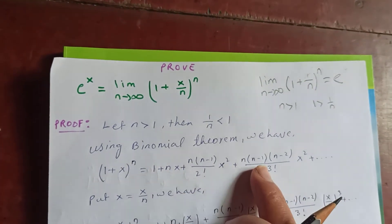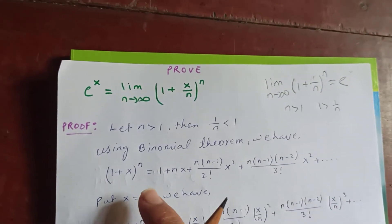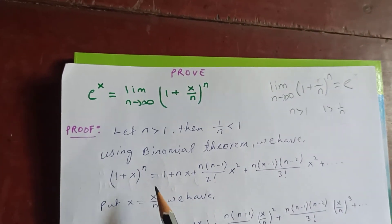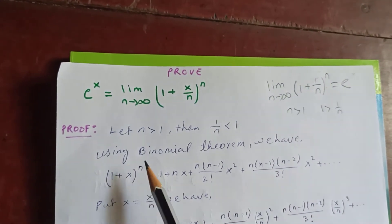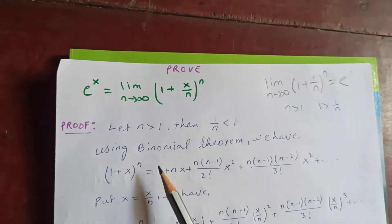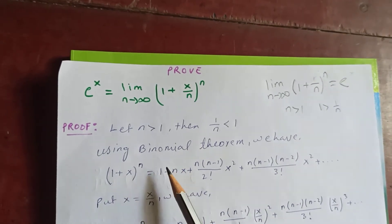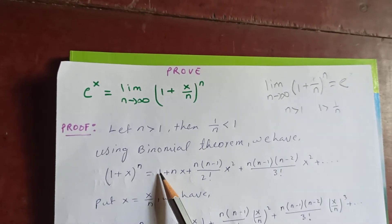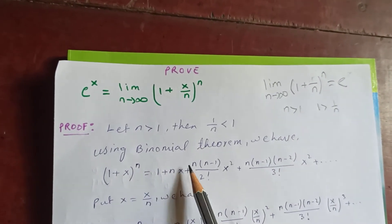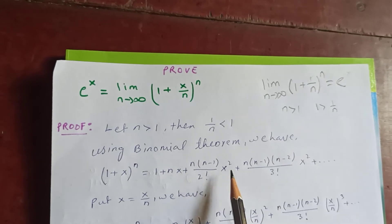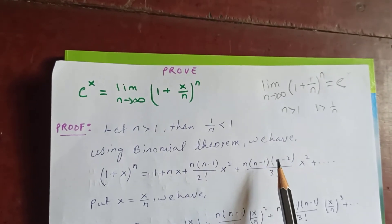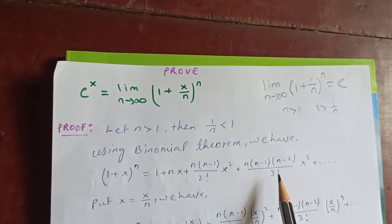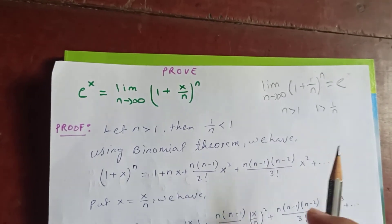So using the binomial theorem, we have that by the binomial theorem, (1 + x)^n equals 1 + nx + (n(n−1)/2!) x² + (n(n−1)(n−2)/3!) x³ plus and so on.